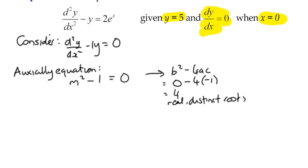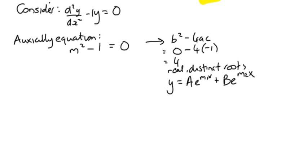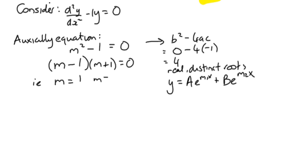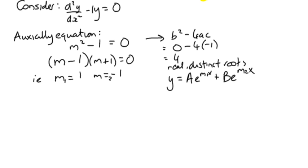With real distinct roots, the form of the solution is y equals Ae^(m₁x) plus Be^(m₂x). We can use difference of two squares or simply say m² equals 1, giving m equals 1 or m equals negative 1. These are our two values of m — it doesn't matter which is m₁ and which is m₂.